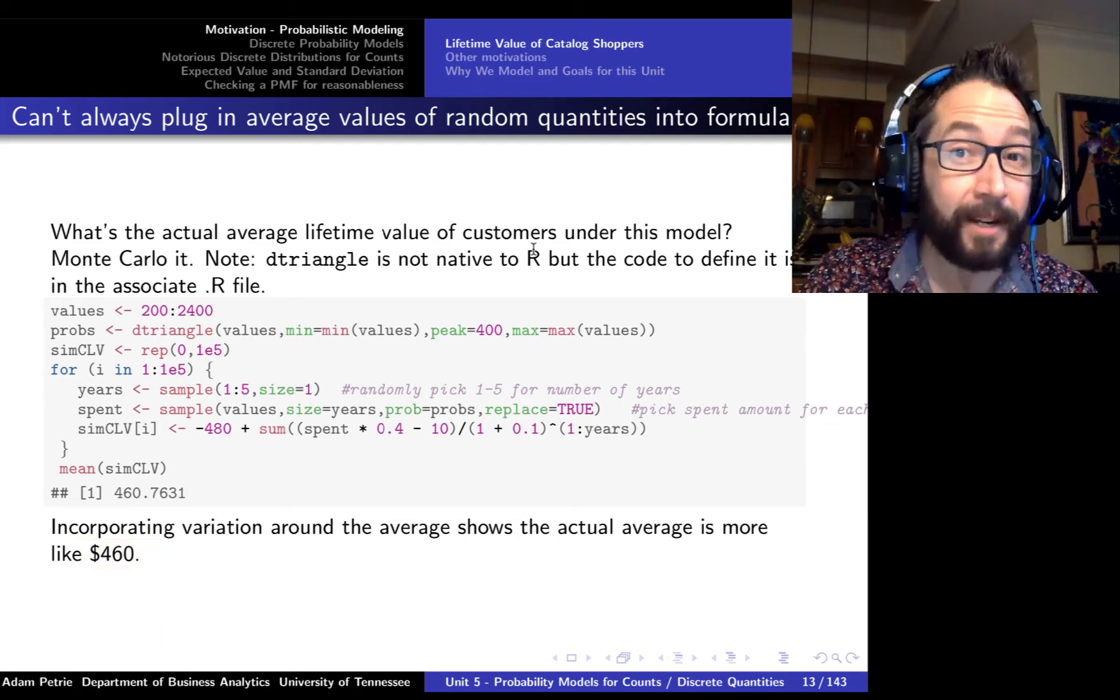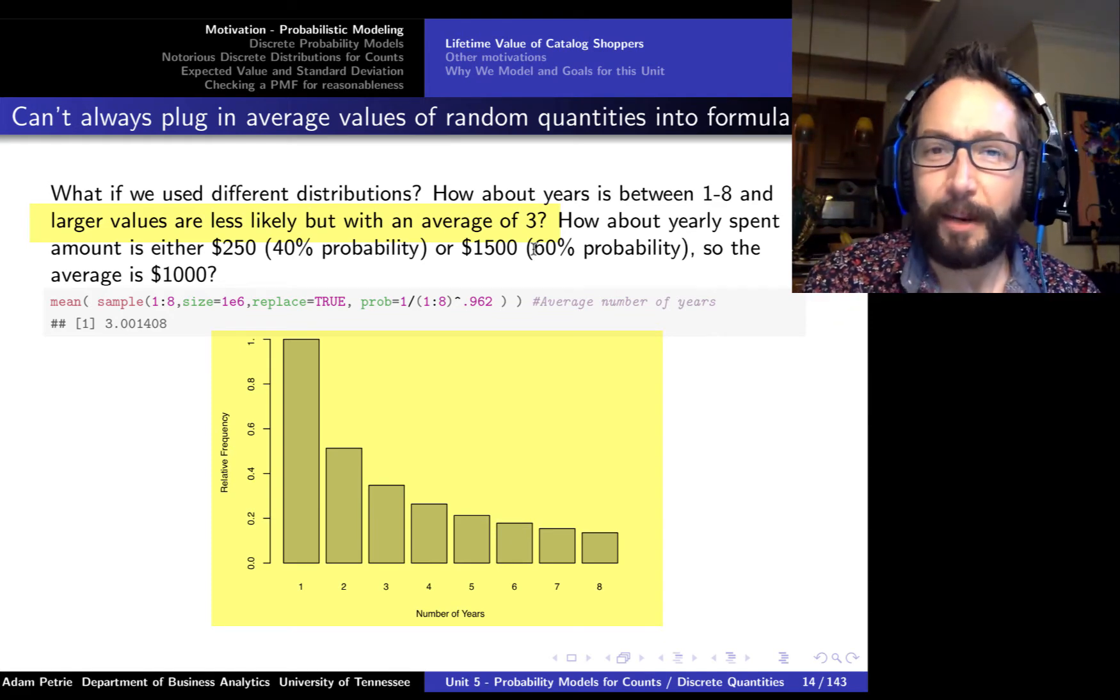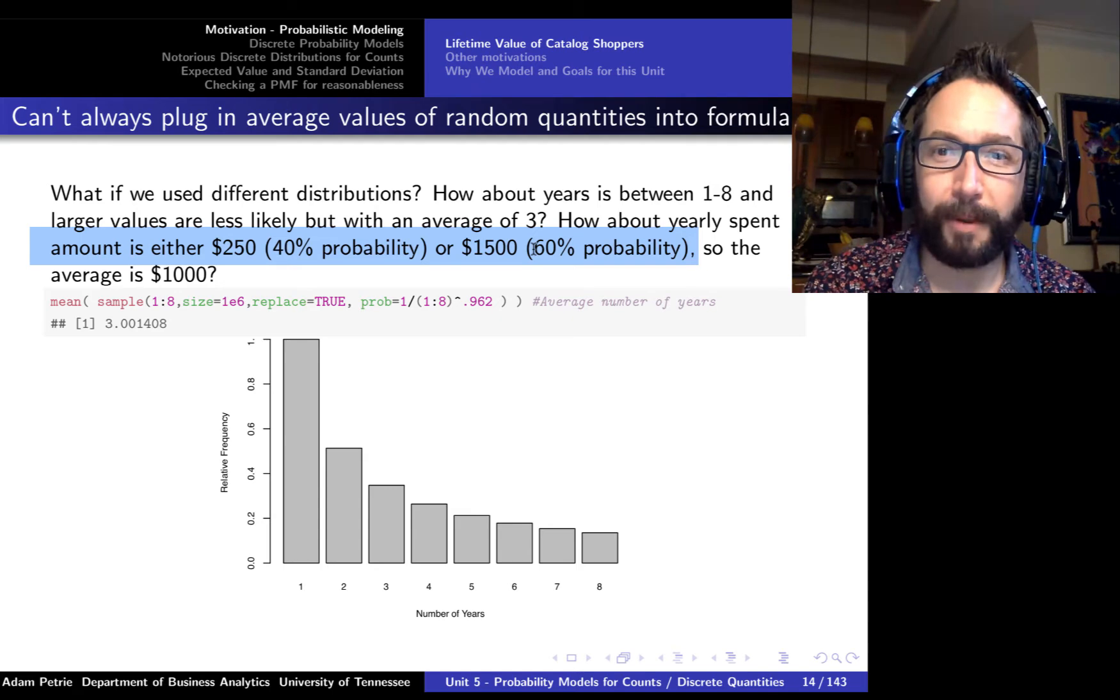In fact, this mismatch can be even bigger if we use a different model for the randomness describing the number of years the customers making purchases and their average spent per year. What if instead of equally likely one year through five years, what if instead we say a customer is going to be shopping with this company for between one and eight years with the following frequencies, kind of peaks at one and then tails off as we go up towards eight. But the average is still right at about three. And what if we take as a probability model for the amount spent per year where they either spend $250 with a 40% chance or $1,500 with a 60% chance? The average is still $1,000 to be consistent with the averages reported by accounting.